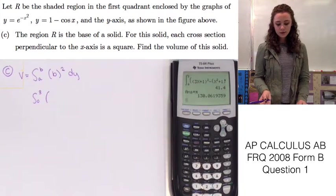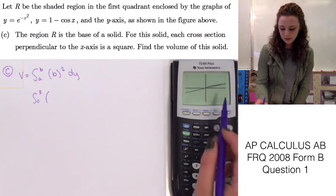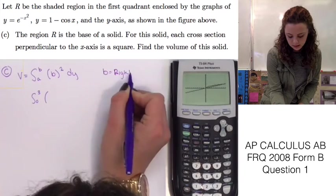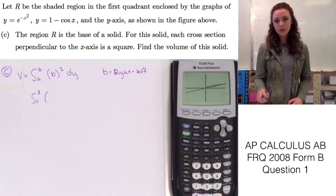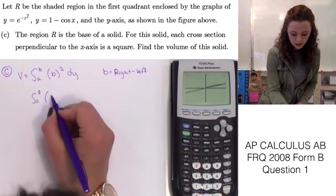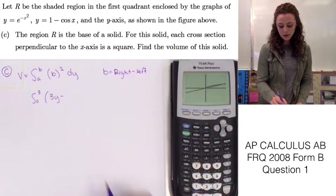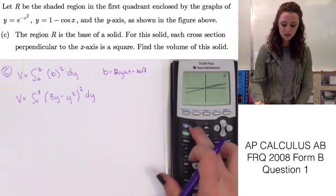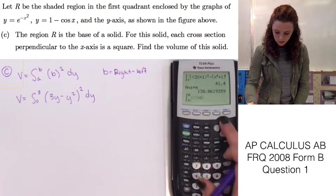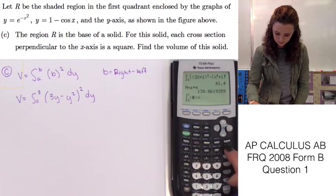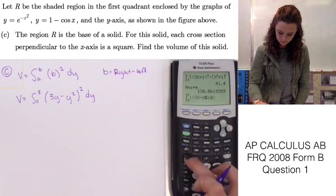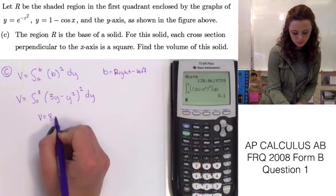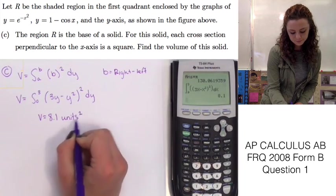The base is going to be, let's look at the graph, the base will be right function minus left function. So base equals right minus left. Our right function, as we saw before, is going to be 3y, and our left function is going to be y squared. Now that we have all of our numbers plugged in for this, we can put that in our calculator. Math 9. Our answer for volume is 8.1 units squared. That's our final answer.